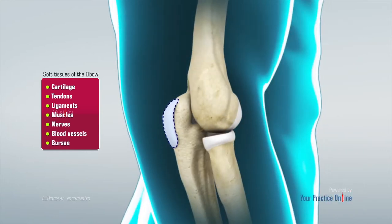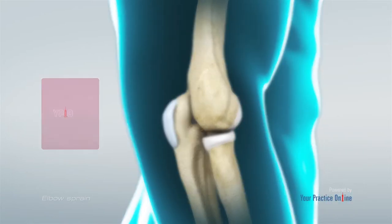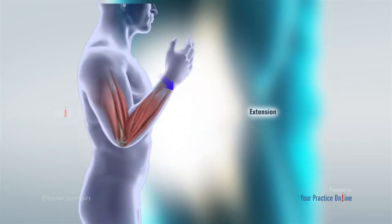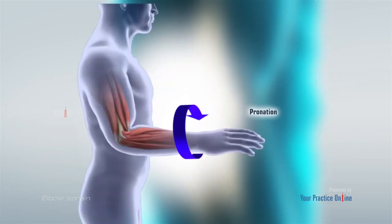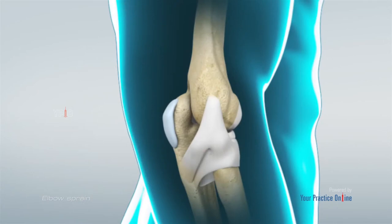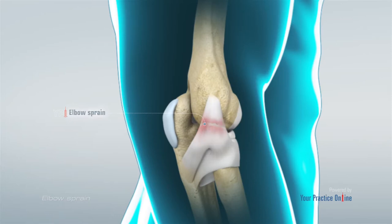The various movements of an elbow joint are flexion, extension, pronation, and supination. Elbow sprain is an injury to the soft tissues of the elbow. It is caused due to stretching or tearing, partial or full, of the ligaments which support the elbow joint. Ligaments are a group of fibrous tissues that connect one bone to another in the body.